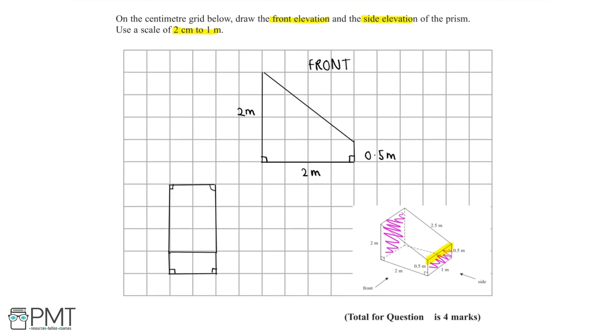Now we can add in our dimensions. This side is 0.5m, and it will be the same for this side. The total height is equal to 2m. We'll draw a line and two arrows to show we're talking about the full height. The width of the rectangle is 1m, and 1m above here. Now we've drawn our front elevation and our side elevation.